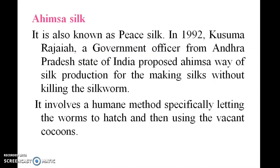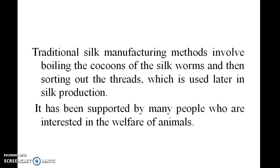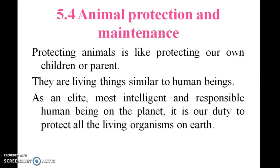Ahimsa silk is also known as peace silk. In 1992, Kusuma Rajaiah, a government officer from Andhra Pradesh, India, proposed the Ahimsa way of silk production — making silk without killing the silkworm. It involves humane methods, specifically letting the worms hatch and then using the vacant cocoons.